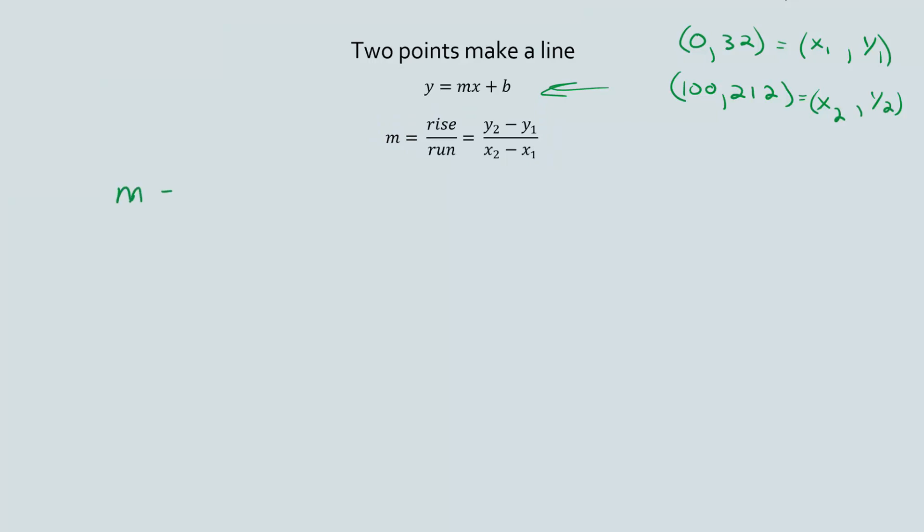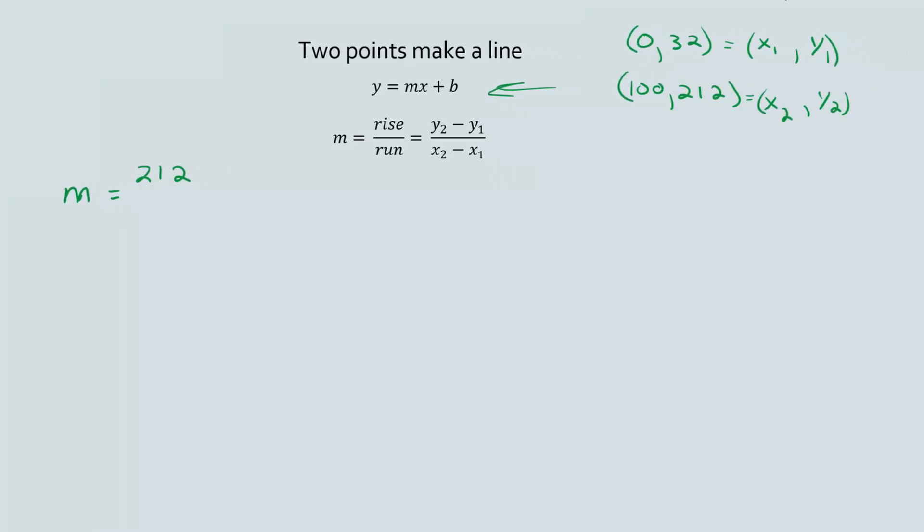So let's plug some numbers in. If we know that slope is equal to y2 minus y1, y2 is 212 and then minus y1 which is 32, divided by x2 which is 100 minus x1, 0. This can simplify down to 180 divided by 100, and this equals 1.8.